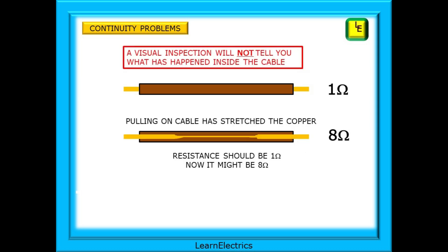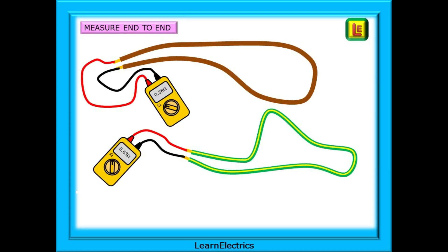Another fault that a visual inspection may not show is when the cable has been stretched, perhaps pulled with some force through conduit or holes in floor joists. Where the cable has jammed, the copper has stretched and become thinner at that point. If it becomes thinner it is no longer the correct size of conductor for the job and will need replacing. Shown here rather dramatically is a cable that has been stretched and now has a resistance of eight ohms, clearly making this cable not fit for intended purpose.